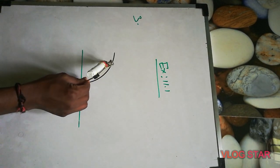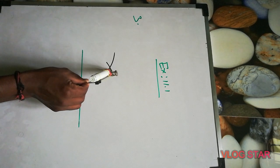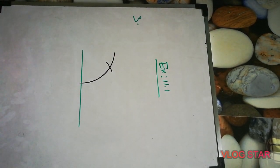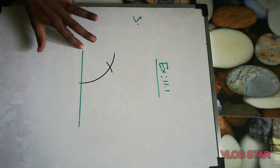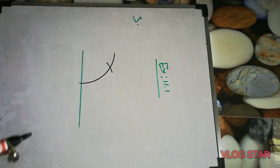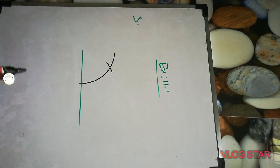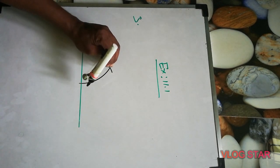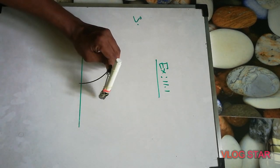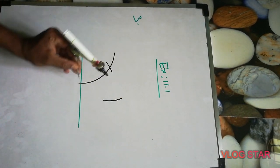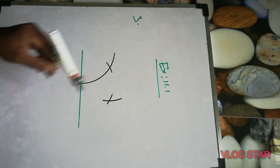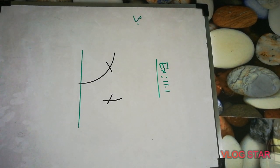Bring the same radius and cut again. If you join this point to the origin, that is 60 degrees. But we need 30 degrees, so from the 60 degree arc, take more than half, cut it here, then from this point cut it again. That gives 30 degrees, so you will join those two points.